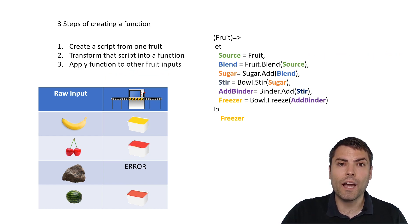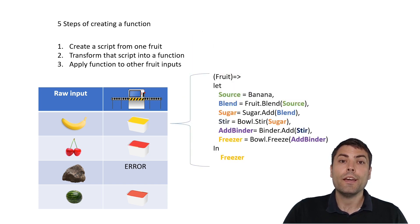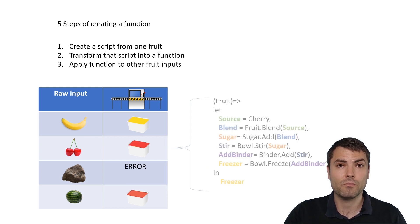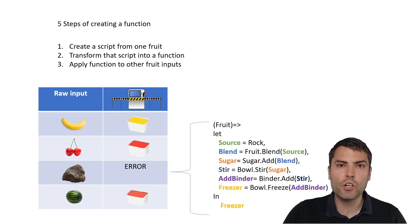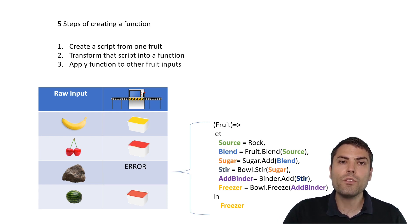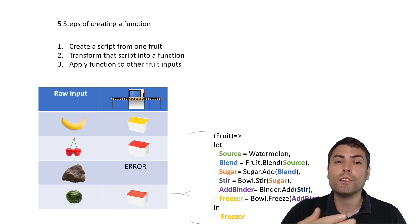And that is the third step: applying the function. The function is always the same and receives objects called fruit that come from the column called raw input. In the first row, the fruit argument becomes banana, which goes through all the applied steps and we receive a banana ice cream. In the second row, the same function receives cherry as an argument, goes through all the applied steps and we receive a cherry ice cream. In the third row, we try to feed the function with the rock argument — the function receives rock, tries to transform it to ice cream, but fails and we receive an error instead. After failing to transform rock to ice cream, it moves to the next row and successfully transforms watermelon to ice cream with the same flavor.